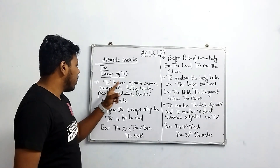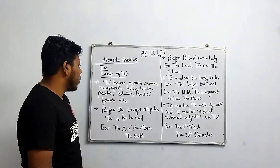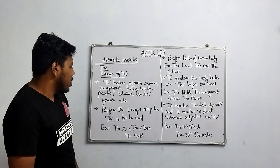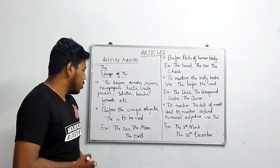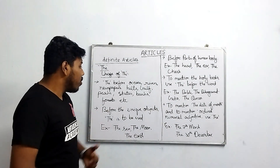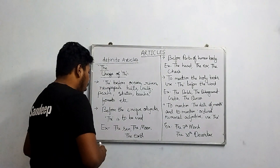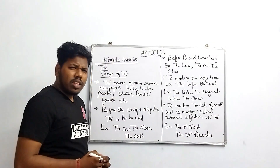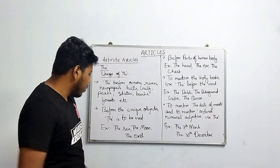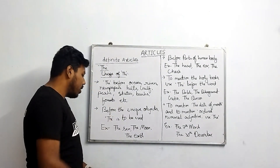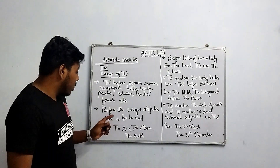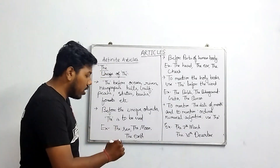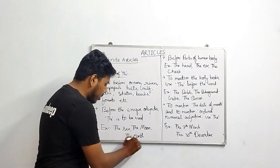The next use is 'the' before unique objects. For example: the sun, the moon, the earth. Also, 'the' is used before human parts of the body — for example: the cheek, the head, the ear. Everything relating to the human body takes 'the'.